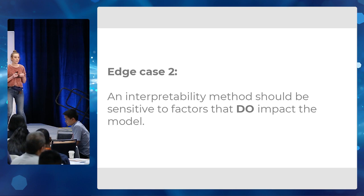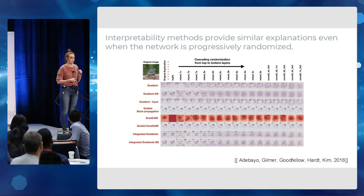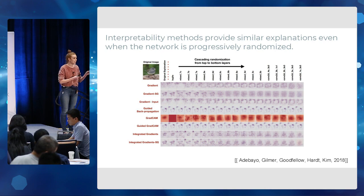The second edge case, which I thought was really fun work, is based on the statement that an interpretability method should be sensitive to factors that do impact the model. This is work by Julius Adebayo and collaborators — it randomizes the network progressively, so the network is complete garbage at that point, but the explanations themselves hardly vary — which is fascinating.